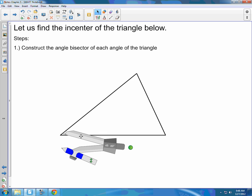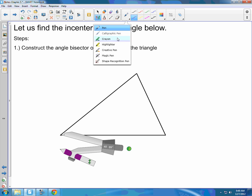So what we need to do is construct the angle bisector of each angle. Each angle of the triangle.